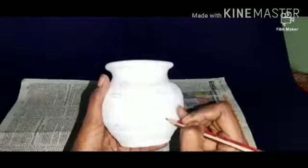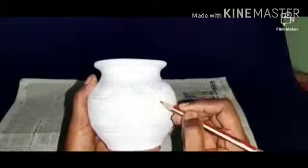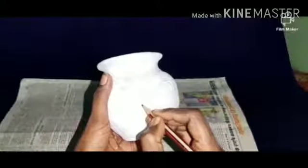In the long area, draw big triangles that touch the double lines. Inside each triangle, you can draw another triangle in the middle.